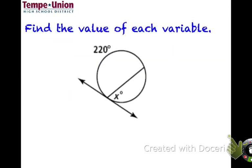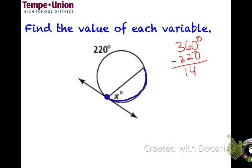First problem: the vertex of the angle is on the circle, so we just use the intercepted arc divided by two. The whole circle is 360 degrees, so 360 − 220 = 140 degrees for the intercepted arc. Therefore x = 140 / 2 = 70 degrees.